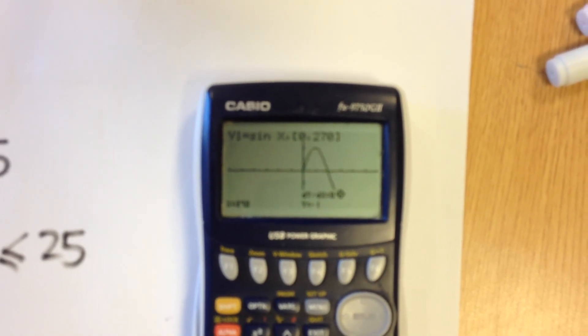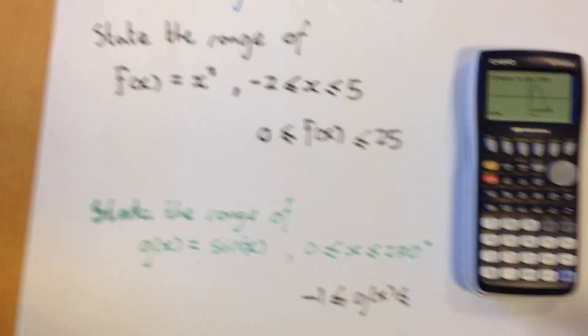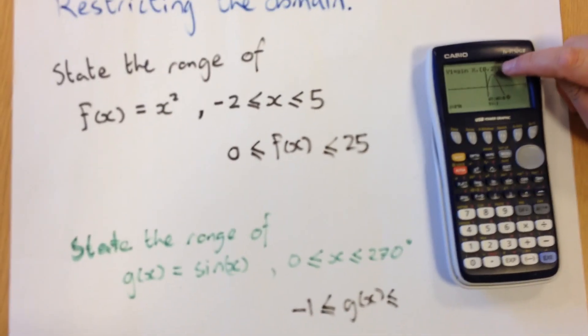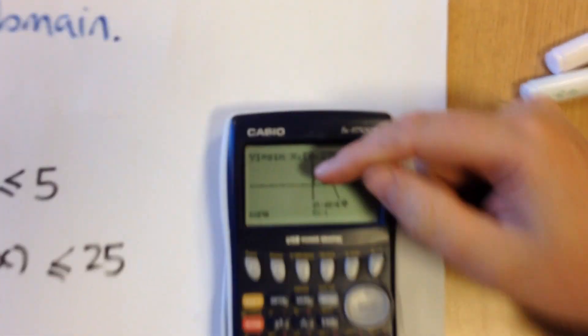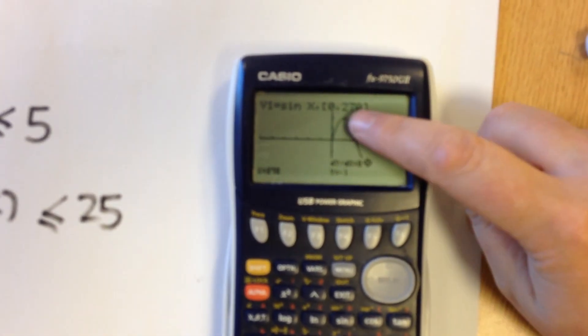So it's going from minus 1 all the way up to our maximum value. Now our maximum value is up here. Now because this is in between the minimum and maximum values of the domain, we can just use g-solve to find that.